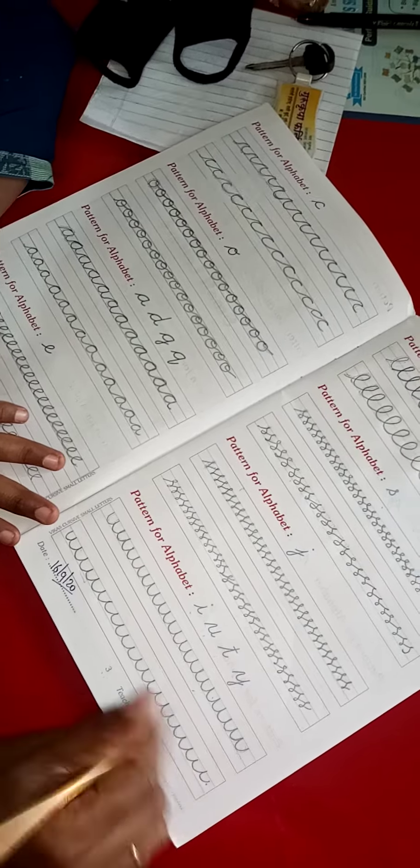Now next, Letter I, U, T, Y. It is very easy. Yes, U for Umbrella. I and T and Y.